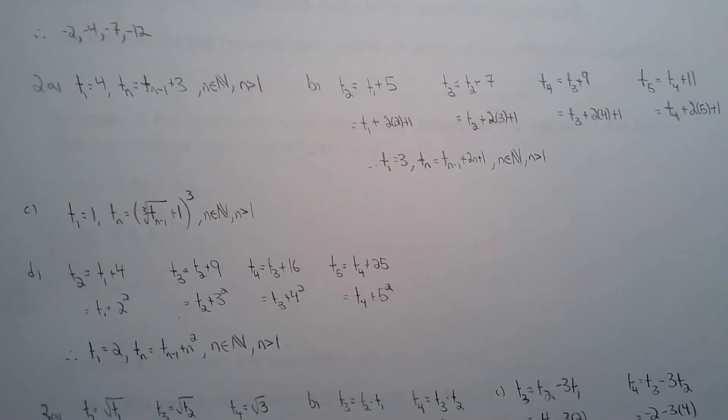For d you're adding by the term number squared. The previous term and the term number squared.